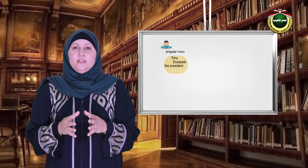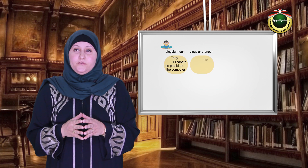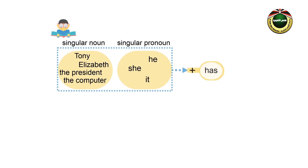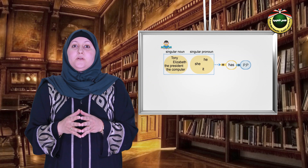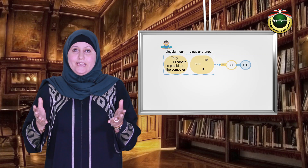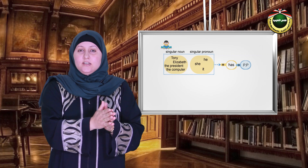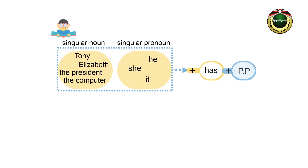Now, you need to know how to form the present perfect tense. First, the present perfect tense is constructed by has or have plus the past participle of the verb. If the subject is a singular noun such as Tony, Elizabeth, the president, the computer, etc., or a singular pronoun such as he, she, or it,